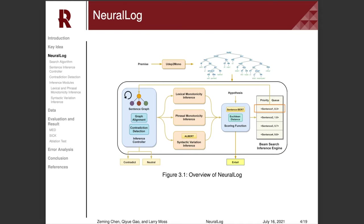This process is performed iteratively until one of the new premises has a distance close to zero, which means we can conclude that a path is found and classify the premise and hypothesis as entailment.